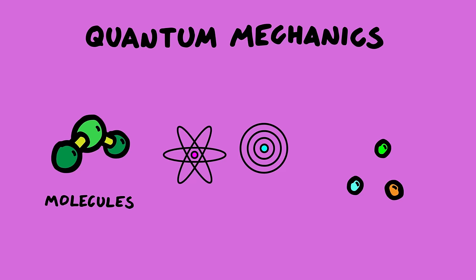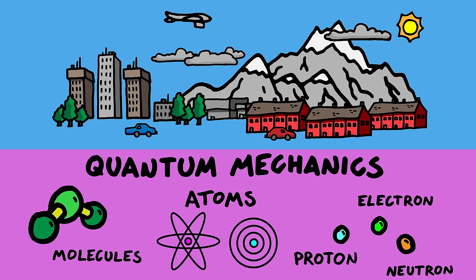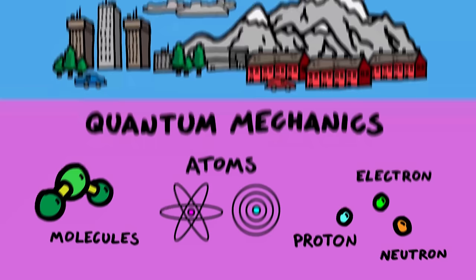So quantum physics is the part of physics that describes the very smallest things in our universe: molecules, atoms, subatomic particles, things like that. And things down there don't quite work the same way that we're used to up here. This is fascinating because you and everything around you is made from quantum physics, and so this is really how the whole universe is actually working.